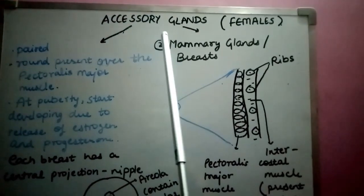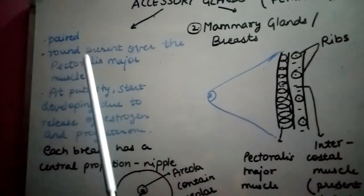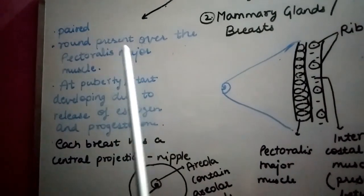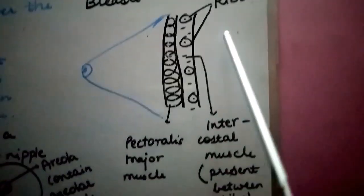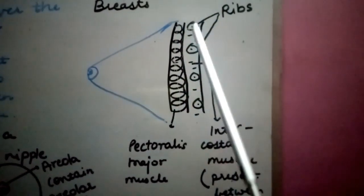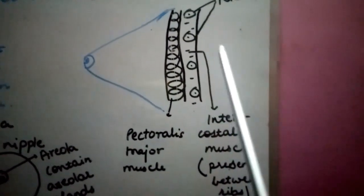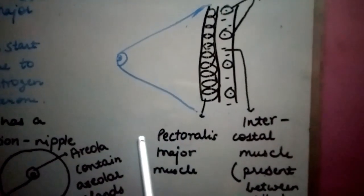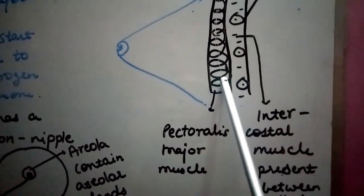The second type of accessory gland in females is the mammary gland, or breasts. Breasts are in pairs and are round structures present over the pectoralis major muscle. The ribs are connected through intercostal muscles, and in front of these is the pectoralis major muscle, over which the breast sits.